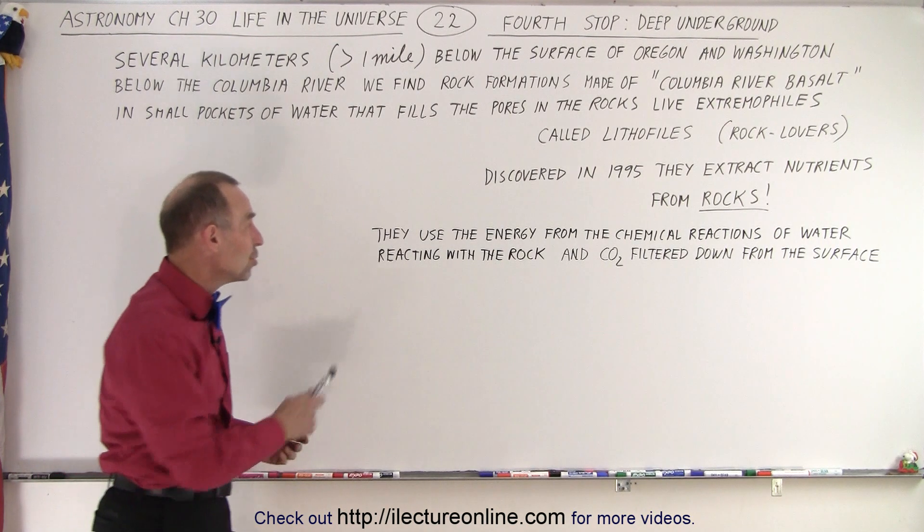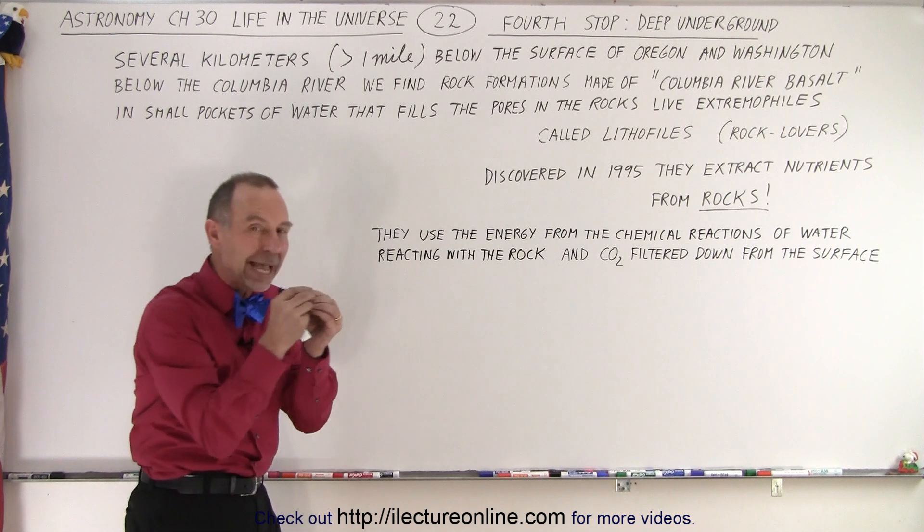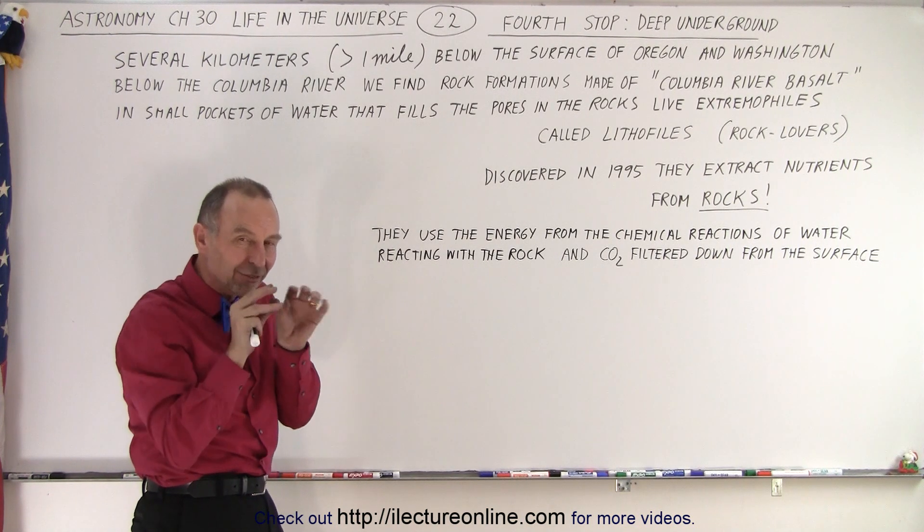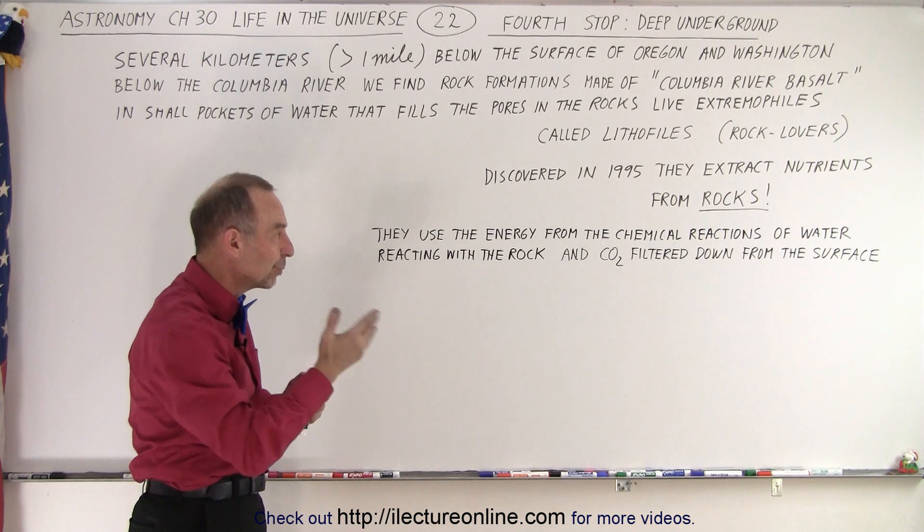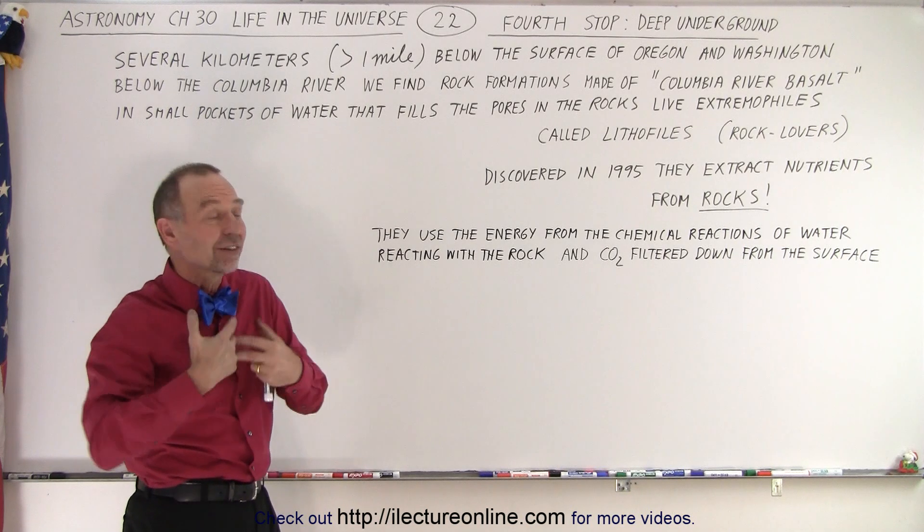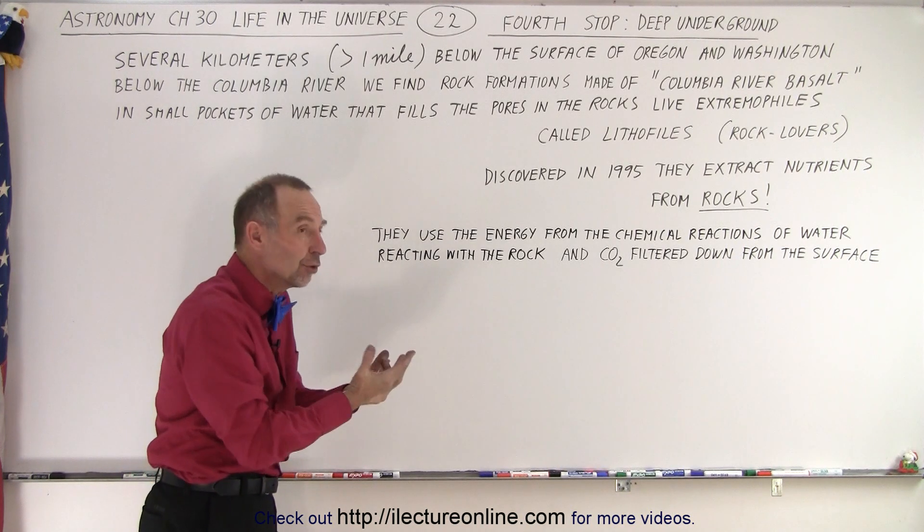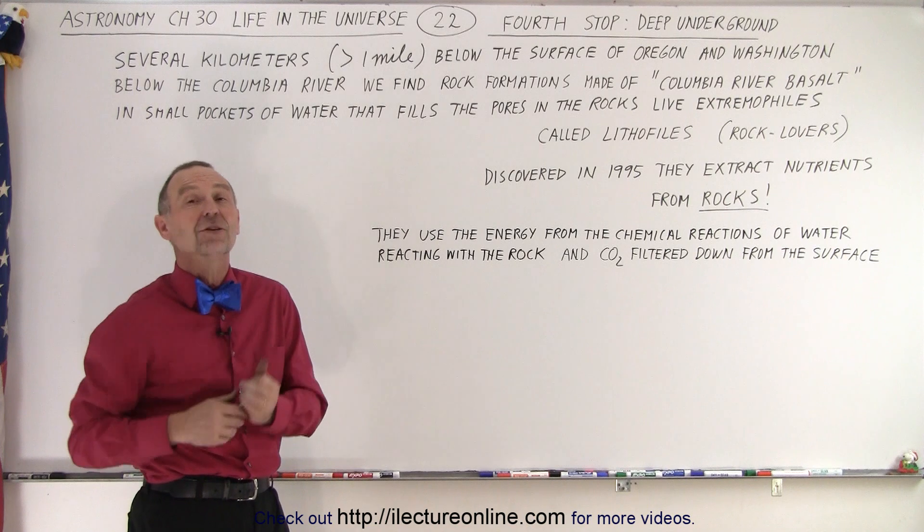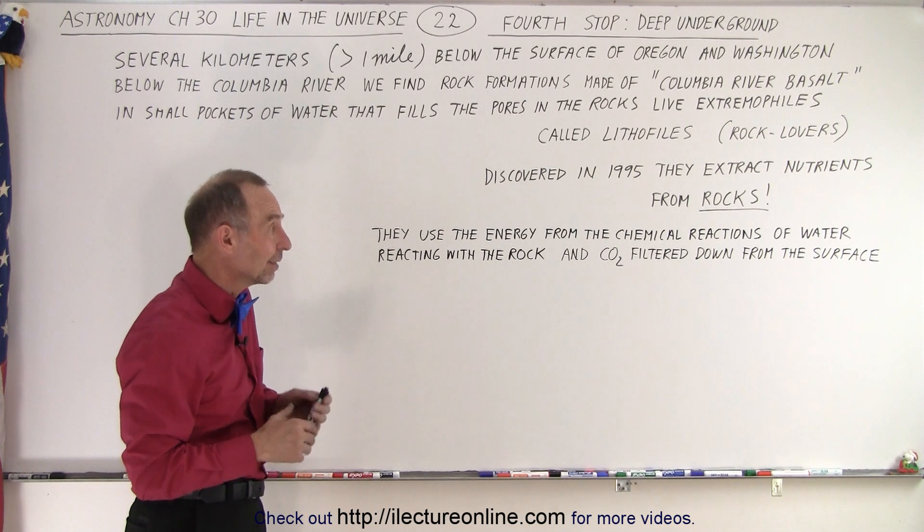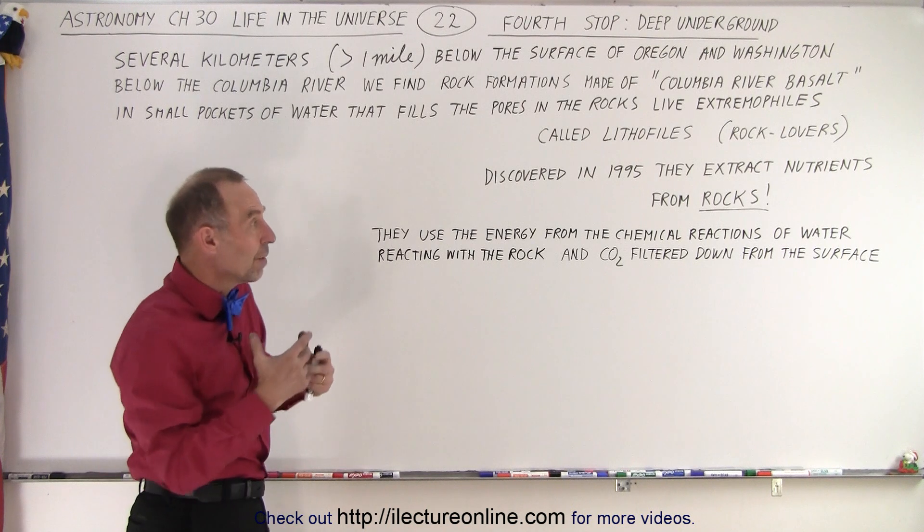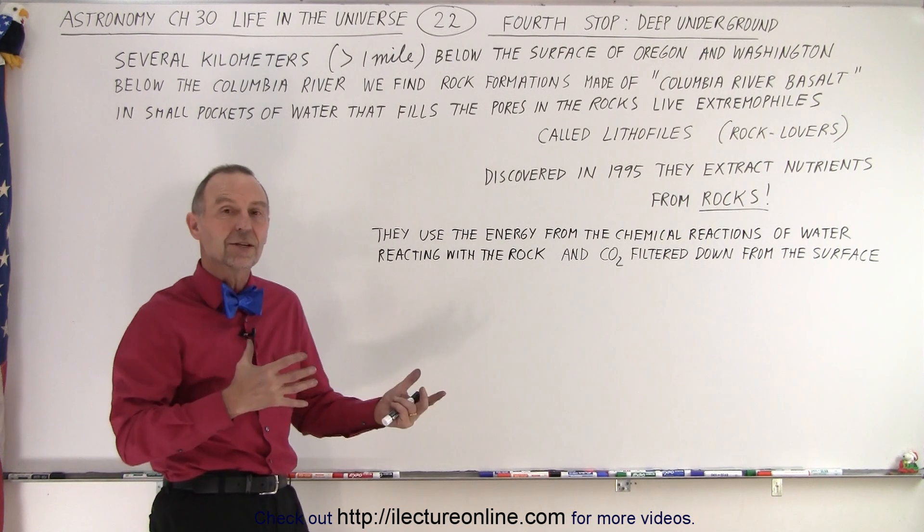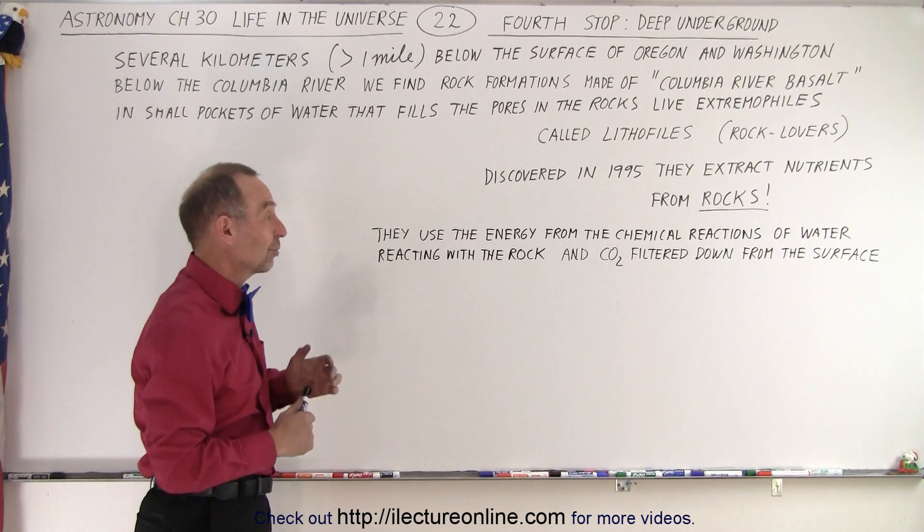So what they do is they use the energy from the chemical reactions between the water that makes it down there and that exists within the small pores of the rock. Water reacts with the rock and then produces the energy from which these life forms can then build nutrients out of the minerals found in those rocks. It's absolutely amazing, but it can actually produce nutrients from rocks, so they're rock eaters, rock lovers are rock eaters.